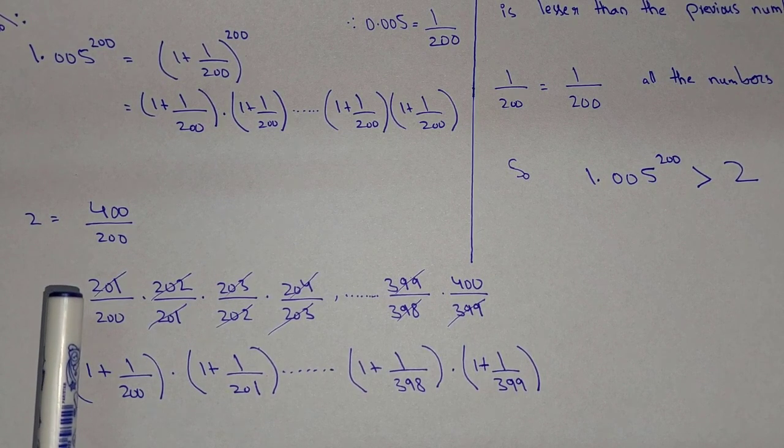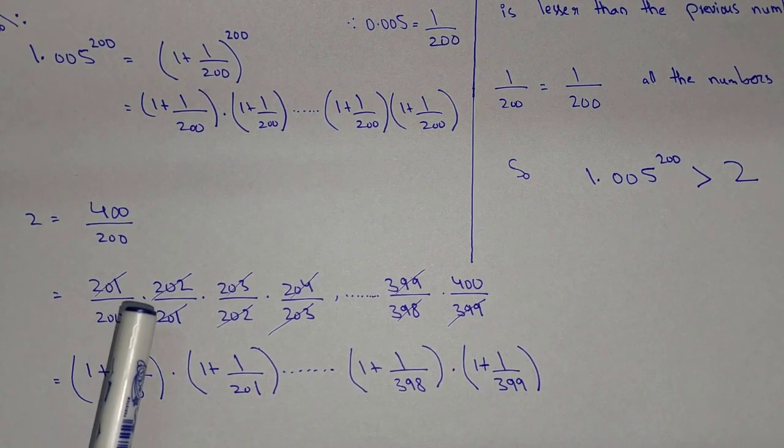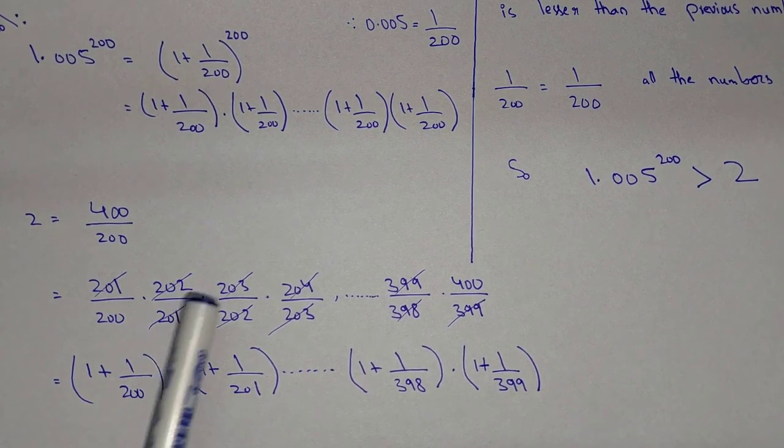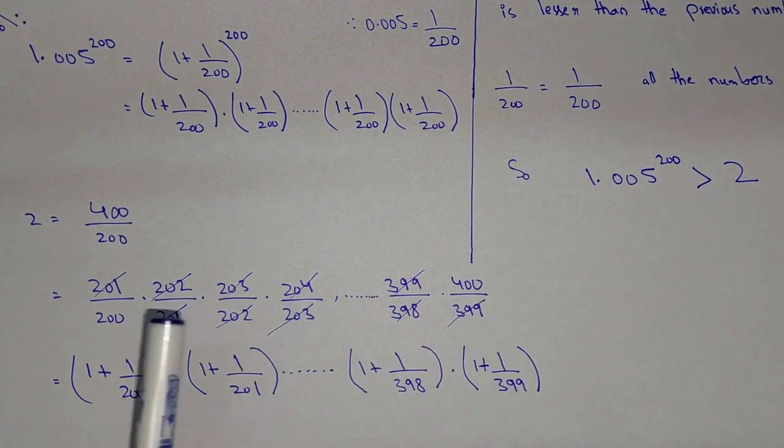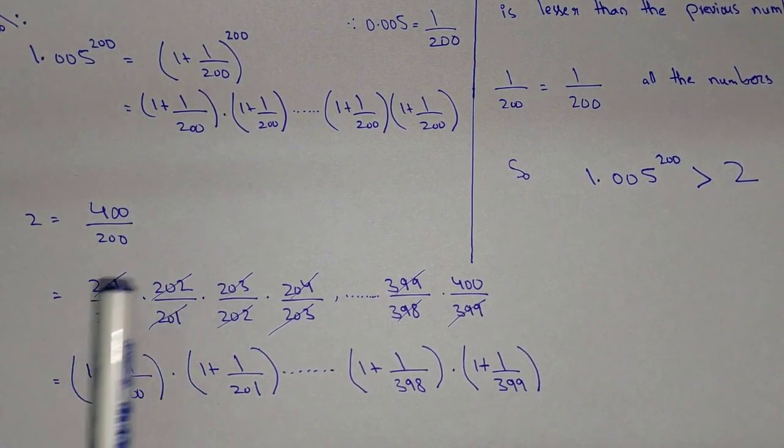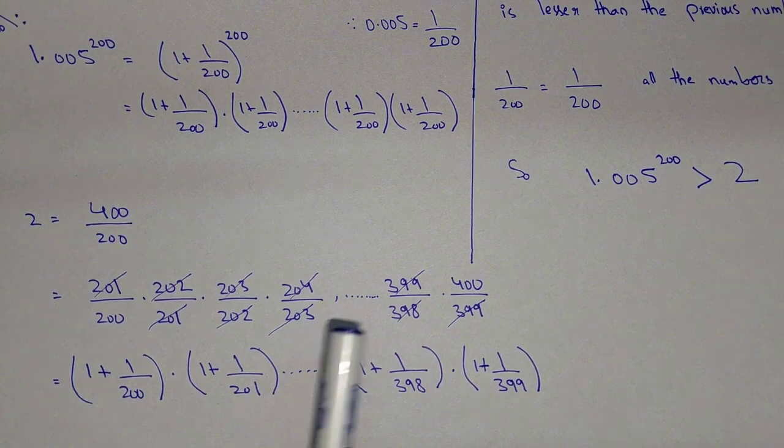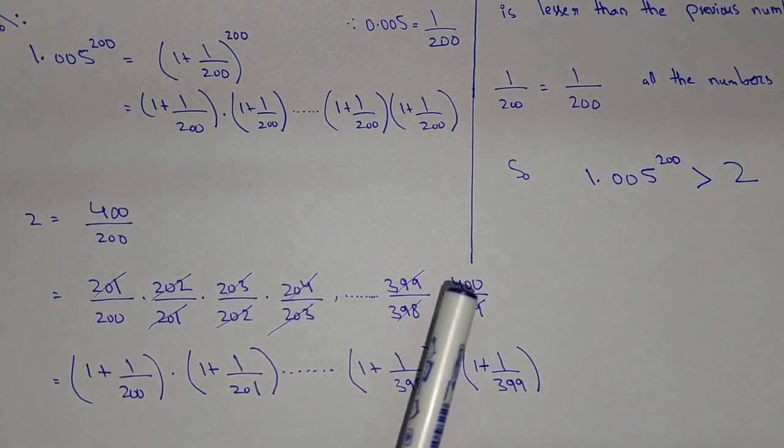So in this way there are, let's suppose, 200 numbers, so all the numbers will be cancelled and the remaining will be 400 over 200.